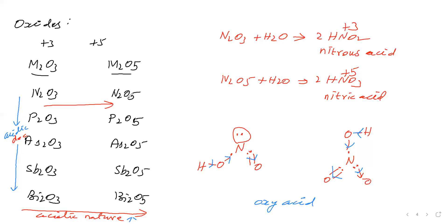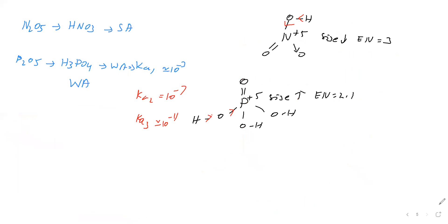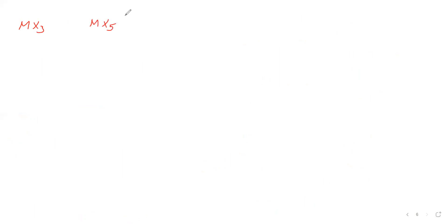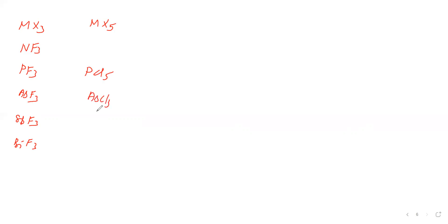Now we will take halides of Group 5A. There are two types: trihalides (MX3) and pentahalides (MX5). Examples of trihalides: NF3, PF3, AsF3, SbF3, BiF3, and also NCl3, NBr3, NI3. Examples of pentahalides: PCl5, AsCl5, SbCl5, BiCl5.